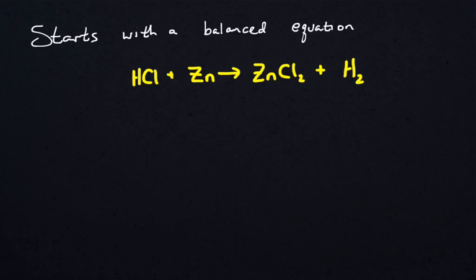Let's balance this — it's unbalanced because looking on the right, there's two Cls and two Hs. On the left there's one Cl and there's one H, so we're out of balance. The law of conservation of mass suggests that the masses and amounts of the reactants has to equal the masses and amounts of the products.